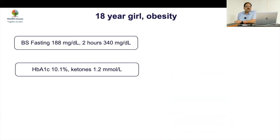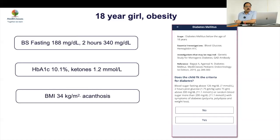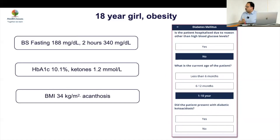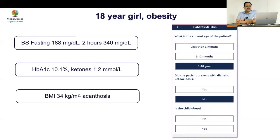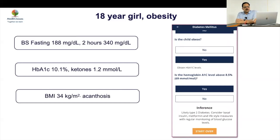Fourth case: 18-year-old girl with obesity, similar picture, but HbA1c is 10% with mild ketosis. Because ketones are present, it is better to start basal insulin rather than a full basal-bolus regimen as for type 1. So the algorithm says: age 1–18, no DKA per se but ketosis present, child is obese — consider that basal insulin may be required in this setting.